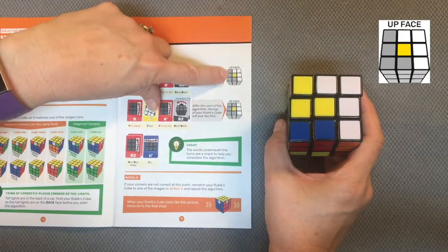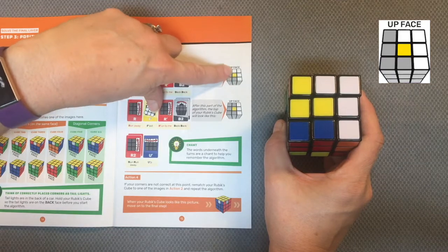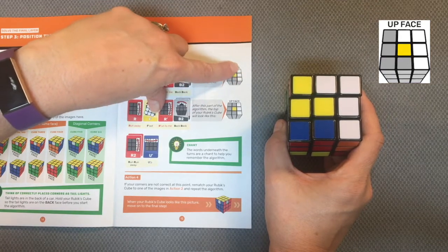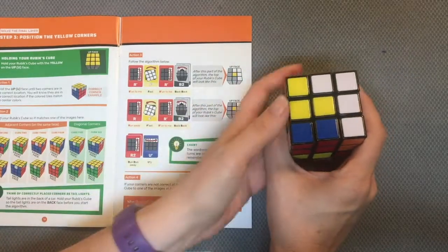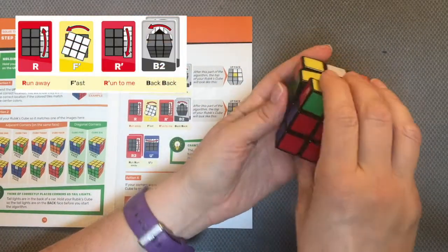The gray I can ignore, but I want to make sure I have this sort of upside-down L and white, which I do. So I can keep going with my algorithm: right away, front to the left, right towards me, back twice.